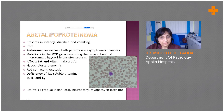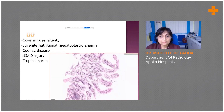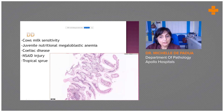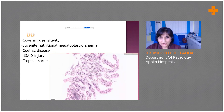The child has deficiency of fat-soluble vitamins A, E, and K primarily, leading to retinitis and gradual vision loss, neuropathy, and myopathy in later life. That does not mean every time you see microvacuolation of the enterocytes you should think of this condition — vacuolation can also be found in common conditions like cow's milk sensitivity, juvenile nutritional megaloblastic anemia, celiac disease, NSAID injury, and tropical sprue.